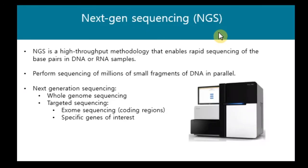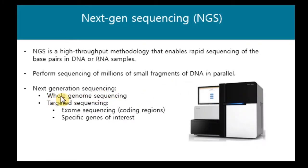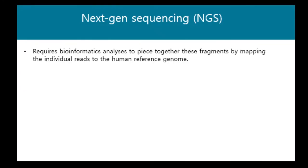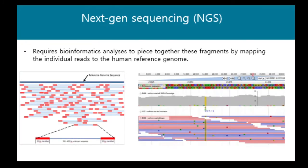Next Generation Sequencing is an advanced high-throughput method that enables rapid sequencing of base pairs in DNA or RNA samples. It performs sequencing of millions of small fragments of DNA in parallel — a high-throughput methodology in which millions of DNA fragments can be sequenced at the same time. It can be either whole genome sequencing, or targeted sequencing of specific regions such as the exome or genes of interest. Although it is a rich data source, it requires bioinformatic analysis to piece together all fragments by mapping individual reads to the human reference genome.